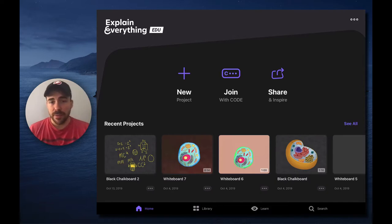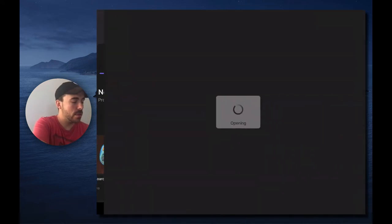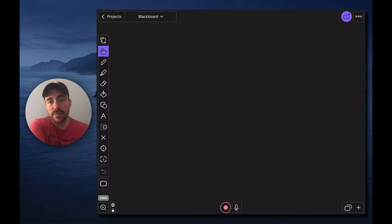So once you've launched Explain Everything, you can install it from self-service. Go ahead and go to New Project and then a blank canvas and now you have plenty of space for you to do your work.